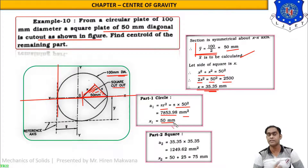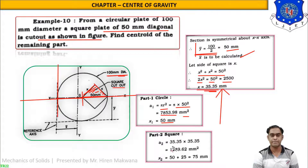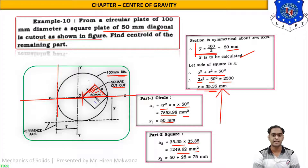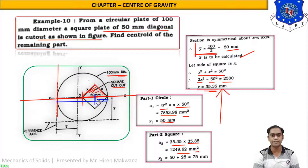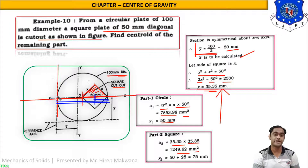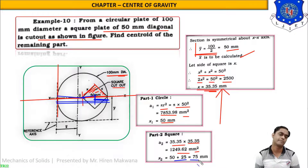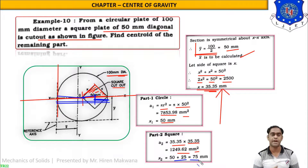For part 2, the square: side = 35.35 mm, so A2 = 35.35² = 1249.62 mm². For x2, the center of the square diagonal is at a distance from the y-axis. The total diameter is 100, and the half-diagonal is 25, so x2 = 50 + 25 = 75 mm. These are the calculations for part 1 (circle) and part 2 (square).